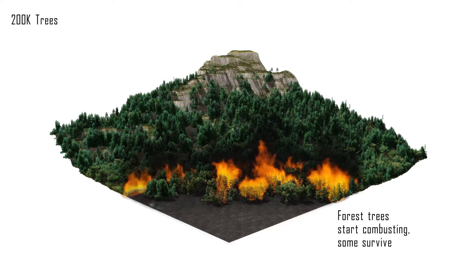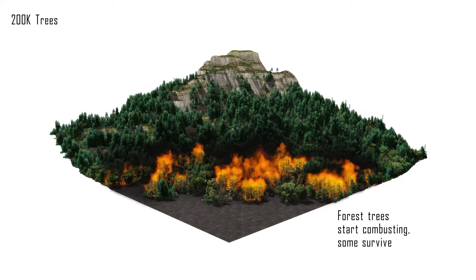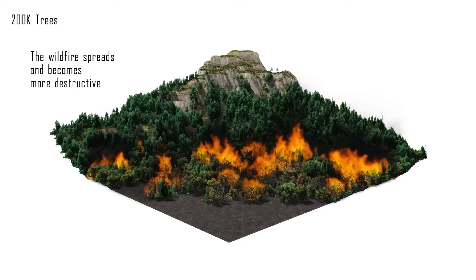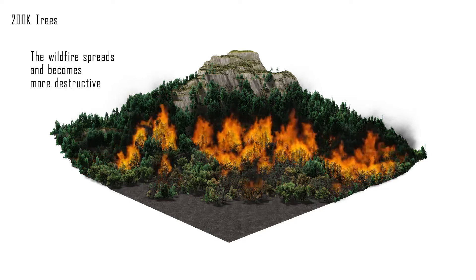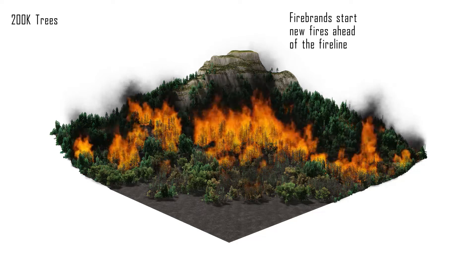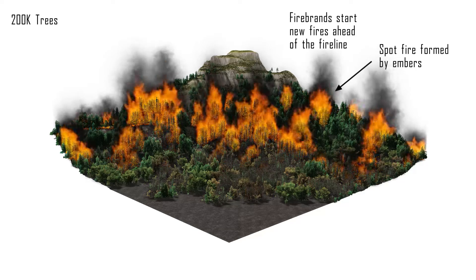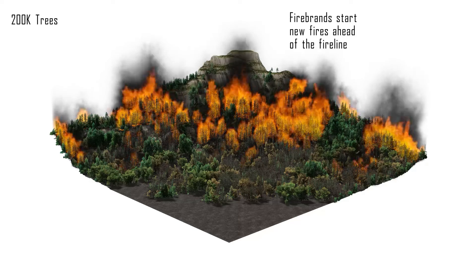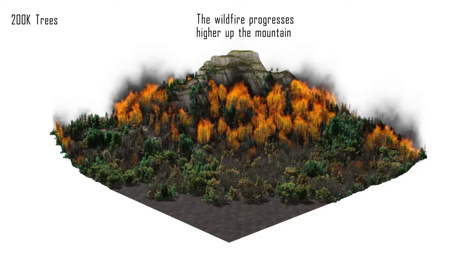Here, a grassland fire reaches the edge of a mixed forest at the foot of a mountain. It turns into an active crown fire burning down the drier fir trees. As the temperature increases due to the heat release of the burning trees, the wildfire becomes more destructive. Eventually embers are formed during tree combustion, which, advected by the wind, land in new places to cause new fire spots.